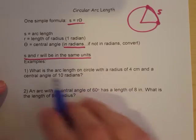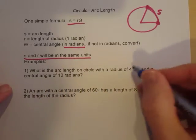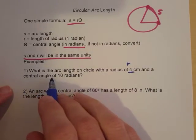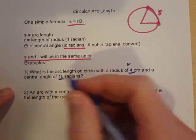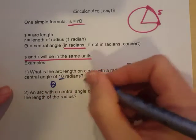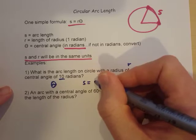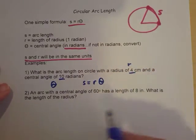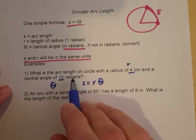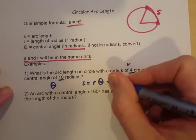Two examples here. Number one: what is the arc length on a circle with a radius of 4? So that's R. And a central angle of 10 radians. So that's going to be our theta. We want to know what is the arc length. Our formula being S equals R theta. Remember that theta has to be in radians, which it is, luckily. And so now we can just plug it in.